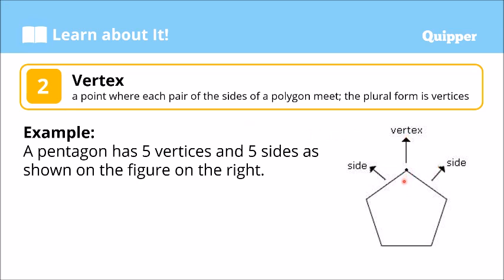This is a pentagon that has five sides. Let's count the sides: one, two, three, four, five — five sides. And the vertices — ang vertex naman — are also five: one, two, three, four, five. So, five vertices.